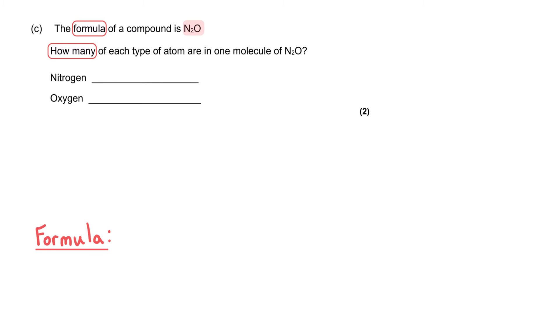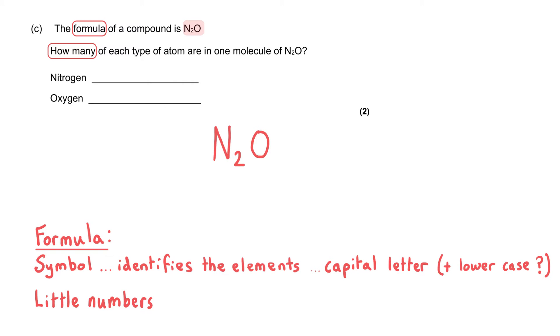Well, the formula of a compound has two distinct features. It has the symbols for the elements that are in the compound, and it might also have some numbers. The symbols tell you which elements you've got present. So we've got a capital N here for nitrogen and a capital O for oxygen.